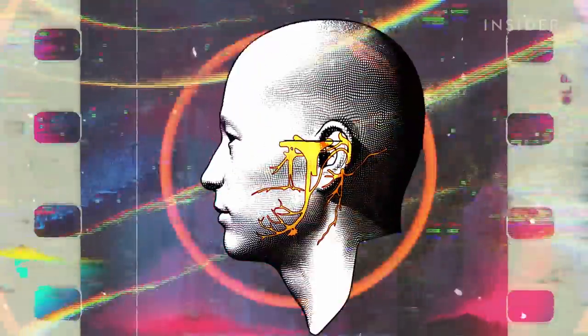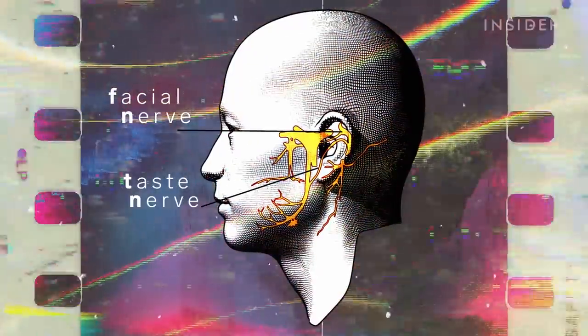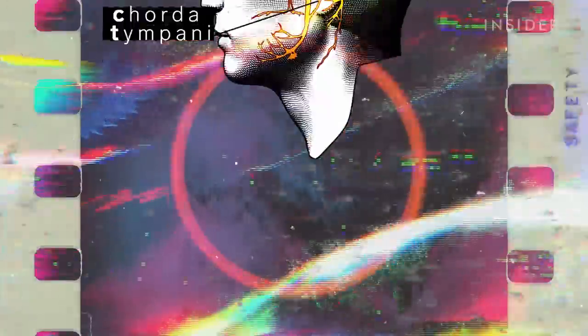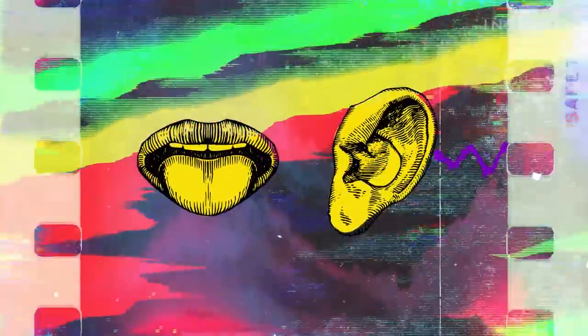But it could actually get worse. Now, along that facial nerve, there is a taste nerve. It's called chorda tympani. That's right, the nerve for taste runs right through your middle ear. And if that nerve gets damaged, you could alter or even lose your sense of taste permanently.